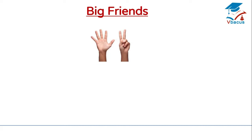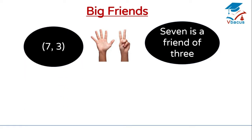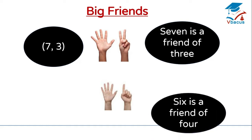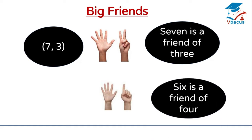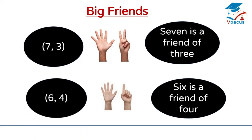How many fingers are closed? 3. How many fingers are opened? 7. So 7 is a friend of 3. We can write it as 7, 3. How many fingers are closed? 4. How many fingers are opened? 6. So 6 is a friend of 4. We can write it as 6, 4.